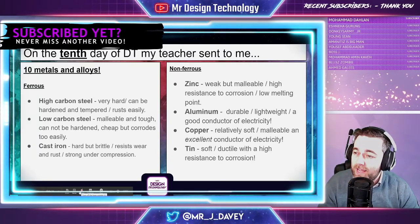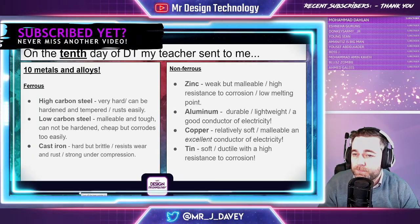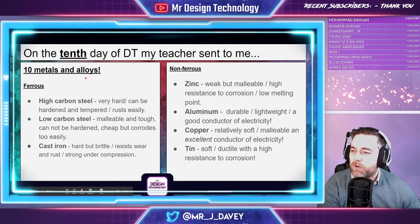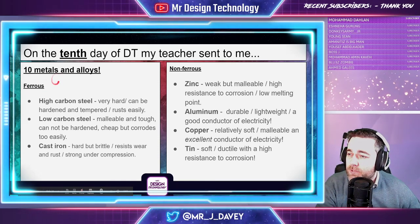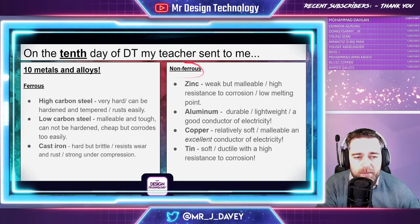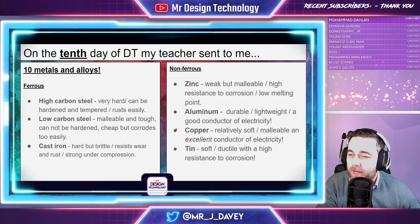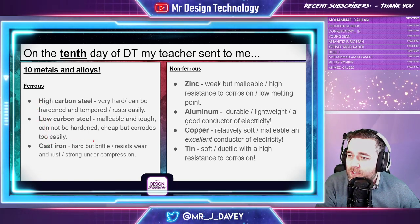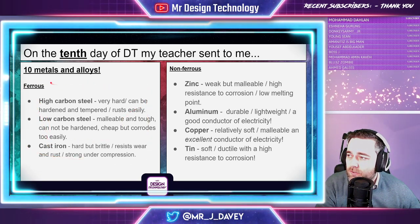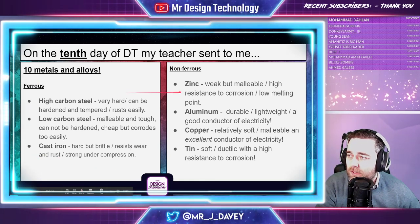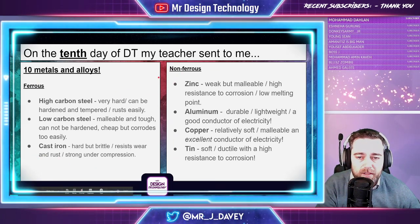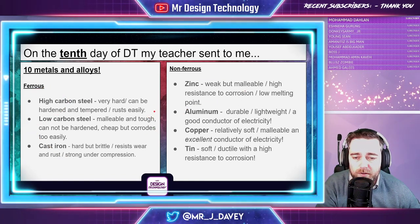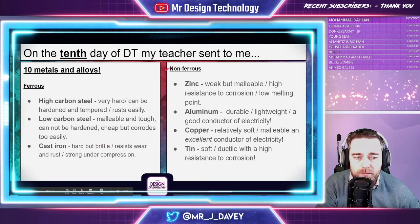On our 10th day of DT, our DT teacher sent to me 10 metals and alloys. To get started, we've got different camps: camp one which is ferrous, camp two which is non-ferrous, and camp three will be alloys. You could split this into different revision cards — blue for ferrous, green for non-ferrous, and yellow for alloys — or just highlight them different colors on the same card.